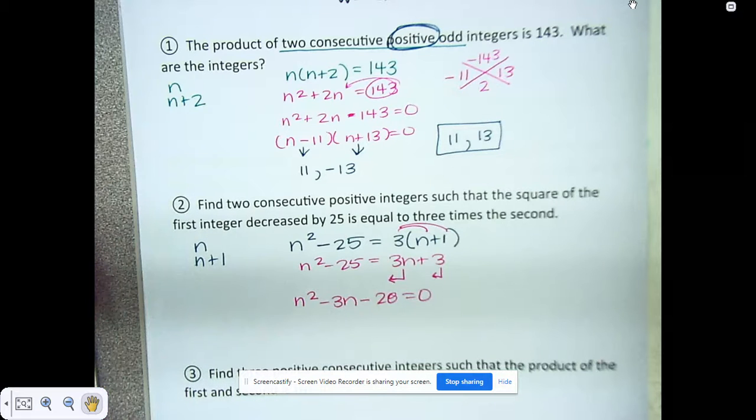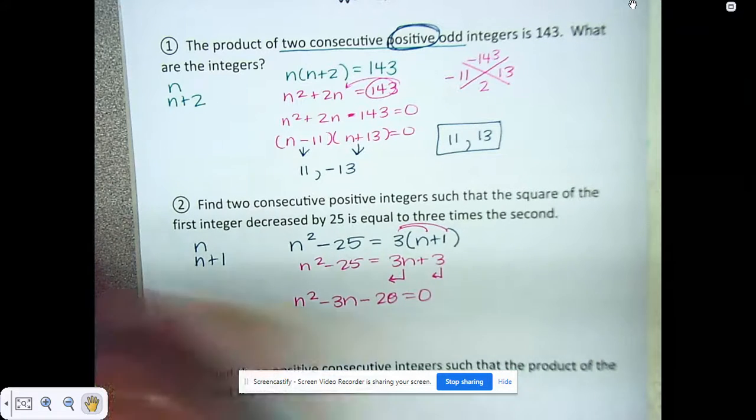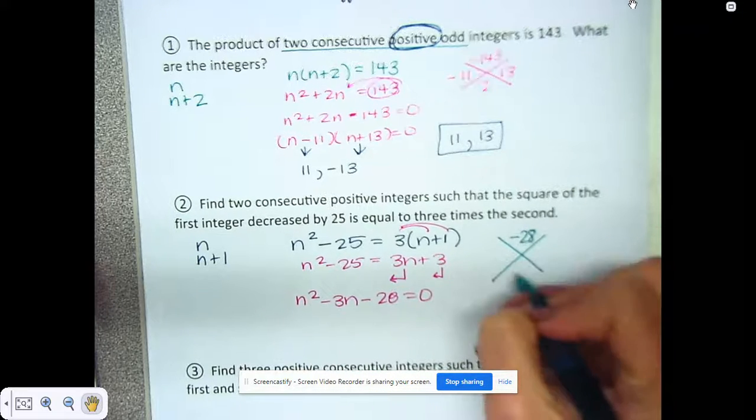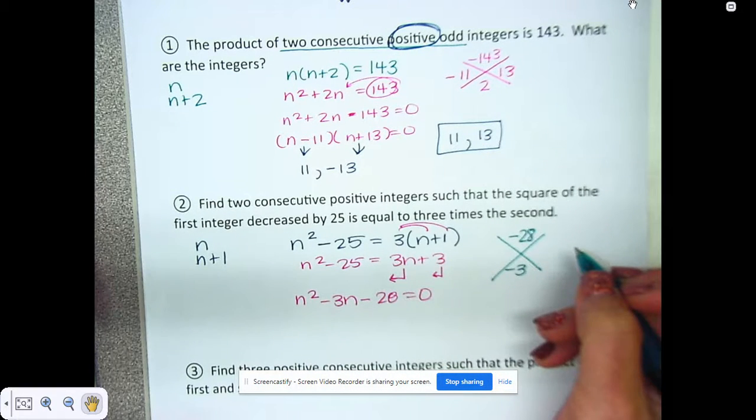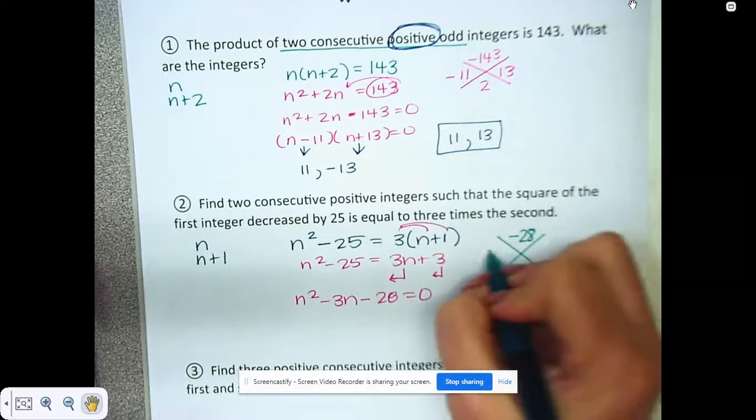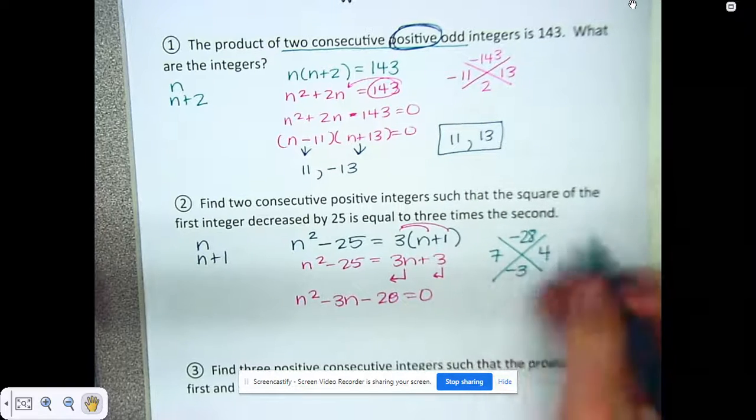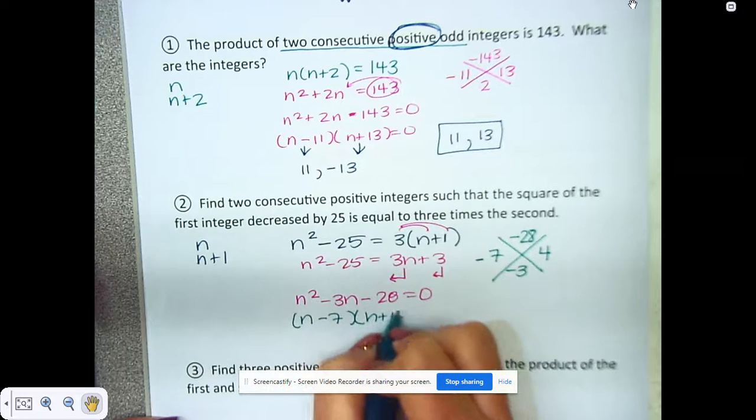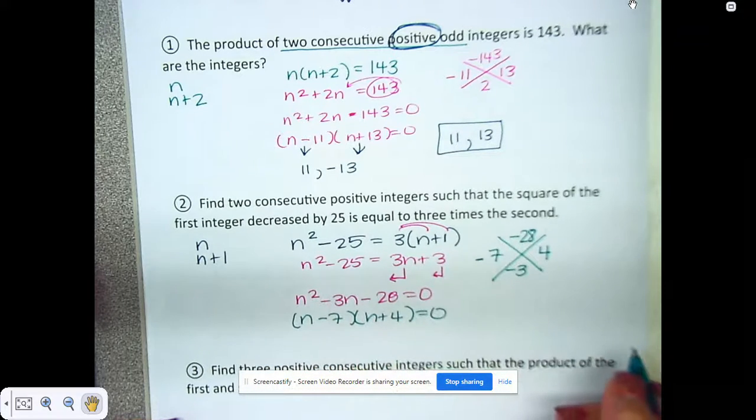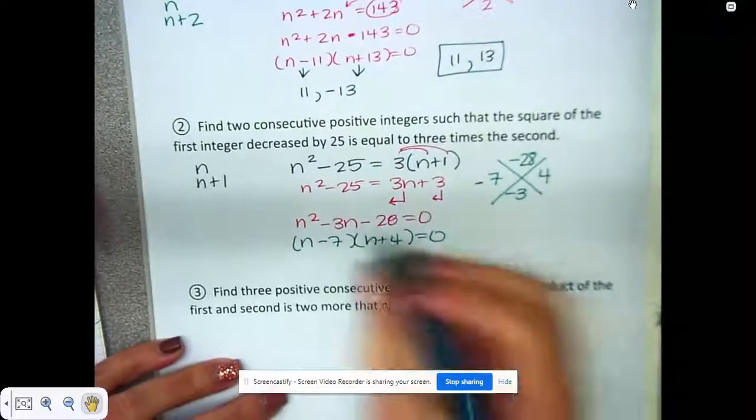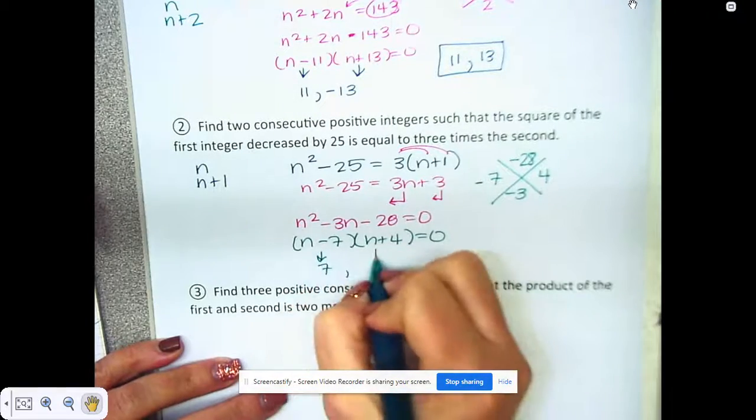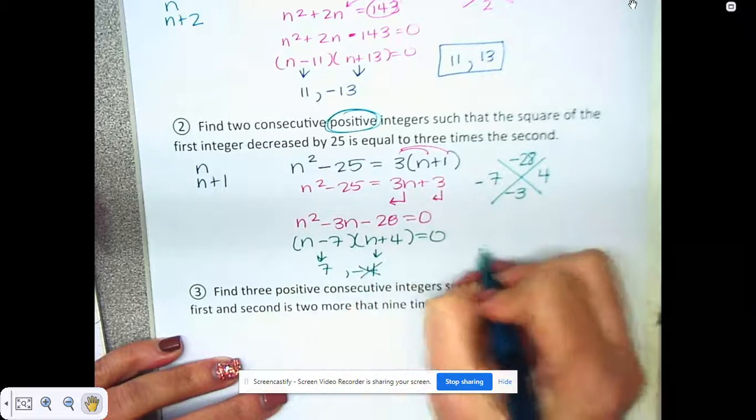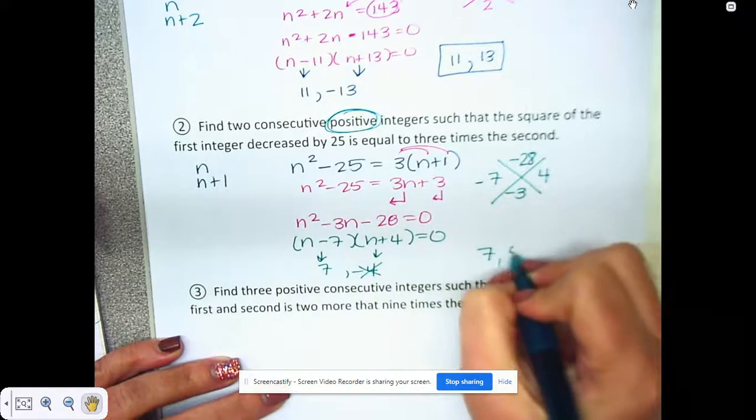We're going to X-box that, so it's going to be a negative 28 and a negative 3, which gives me my two sides of 7 and 4. I need a negative 3, so I'm going to go with a negative 7, so n minus 7 and n plus 4. My two answers are 7 and negative 4. It says positive, so we throw out negative 4, so it's 7 and the one after 7 is 8.